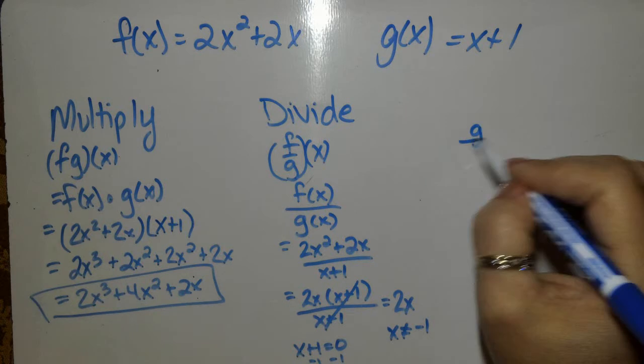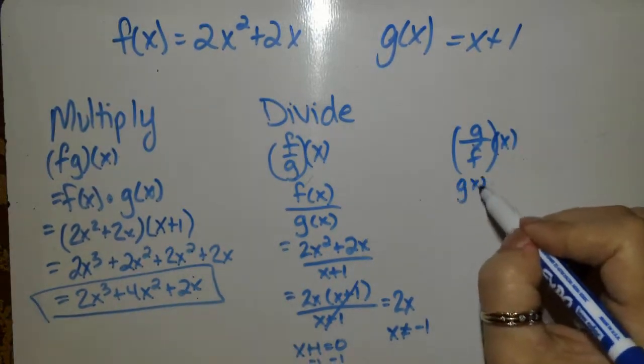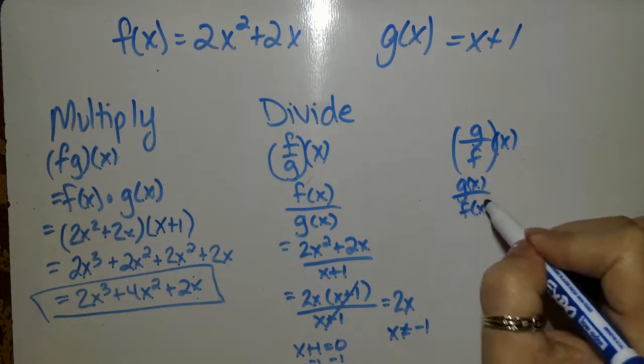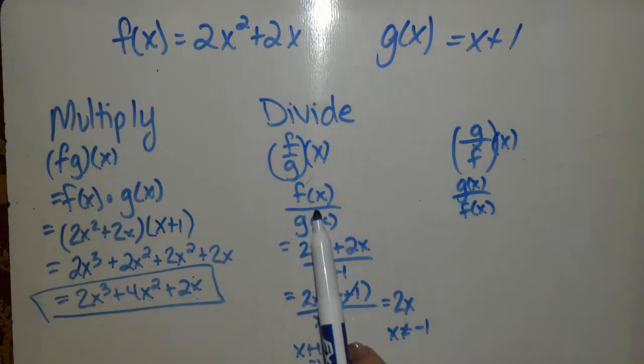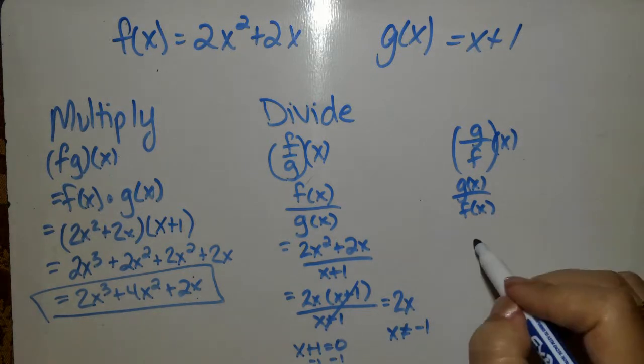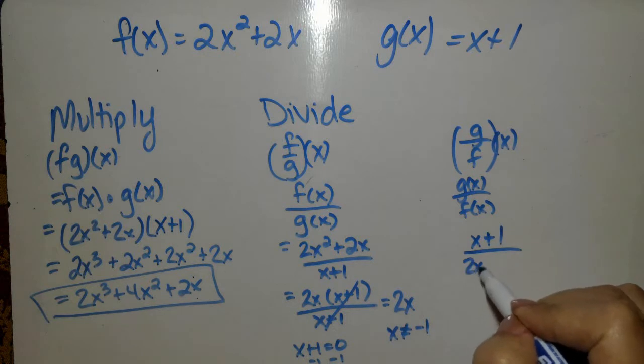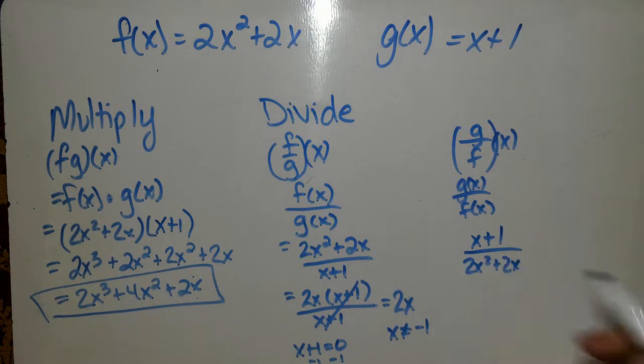You may see it like this. And you need to know that that's g of x divided by f of x. So the first one was f of x on top. Now f of x is on my denominator, so g of x is on the top, f of x is on the bottom. Again, we are factoring.